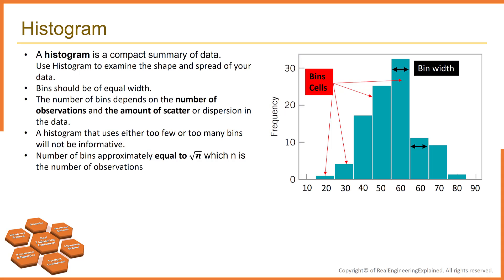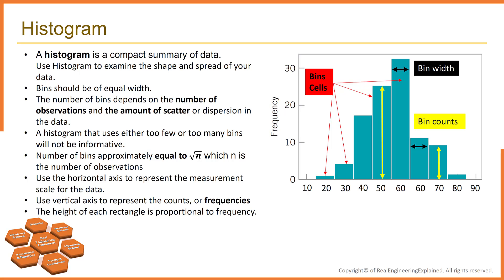Choosing the number of bins approximately equal to the square root of number of observations usually works well in practice. Once the number of bins and the lower and upper boundary of each bin has been determined, the data are sorted into the bins and the number of observations in each bin is counted. To construct the histogram, use the horizontal axis to represent the measurement scale for the data and the vertical scale to represent the counts or frequencies. Rectangles are drawn over each bin and the height of each rectangle is proportional to frequency.